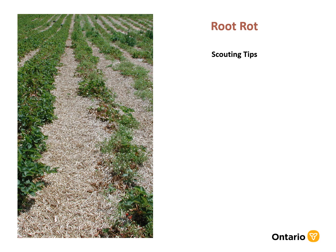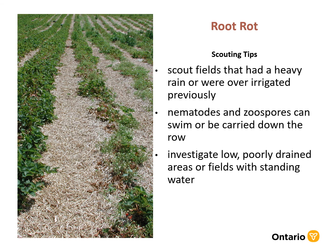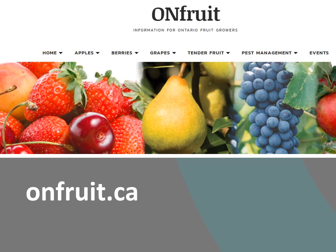A few last notes for scouting root diseases: keep an eye on fields that had heavy rain or have been over-irrigated; nematodes and spores can swim or be carried down the row; investigate low, poorly drained areas or fields with standing water; and cut roots or crowns to look for discolored vascular tissue and rotting symptoms.